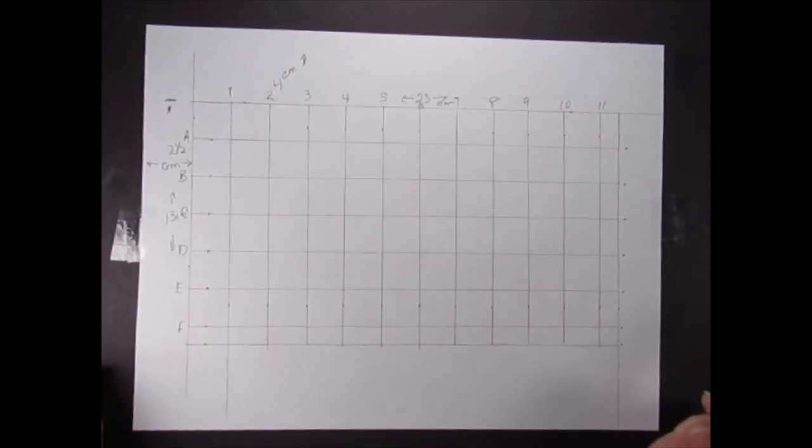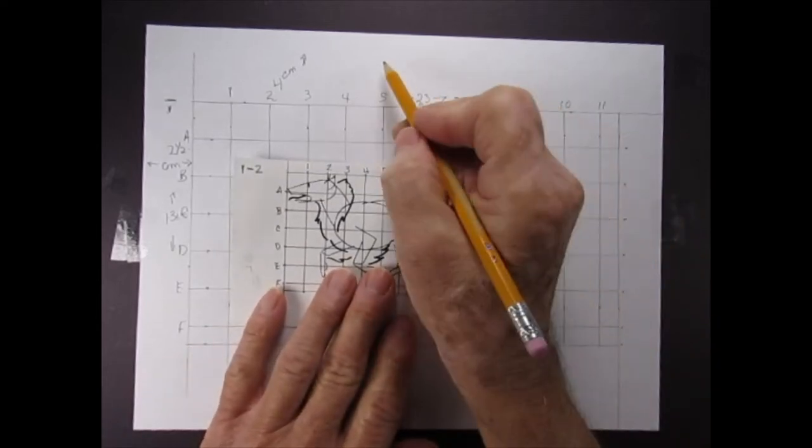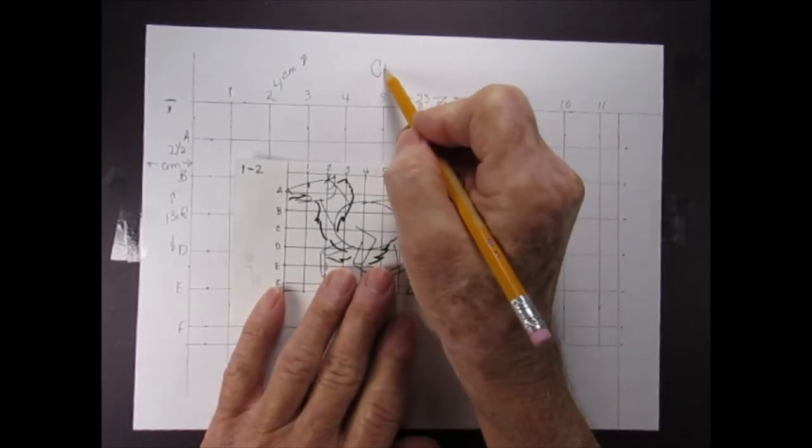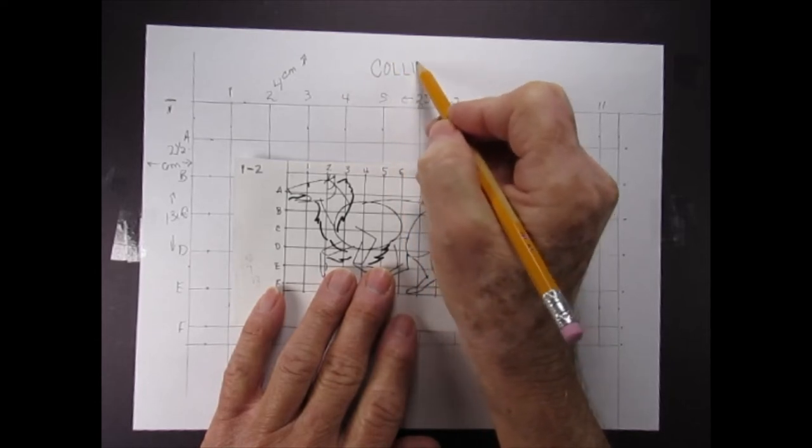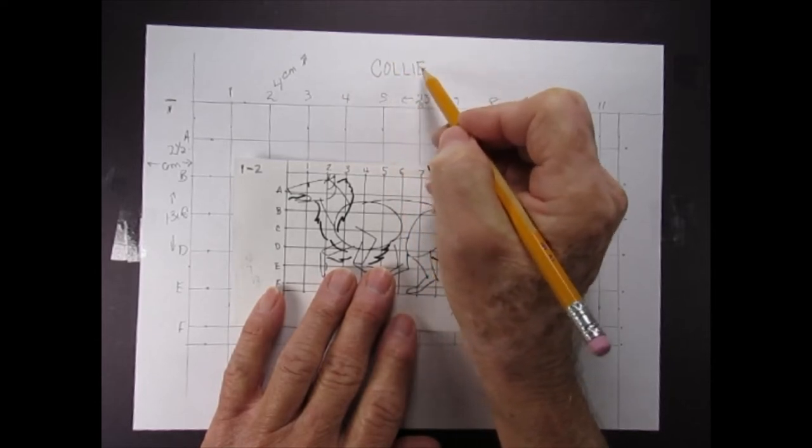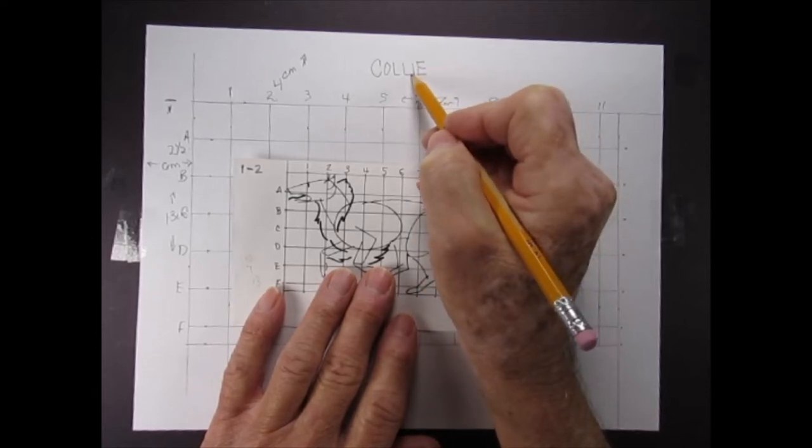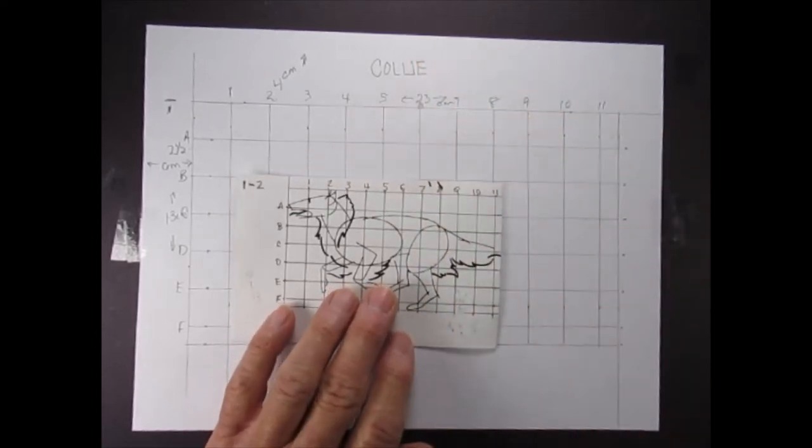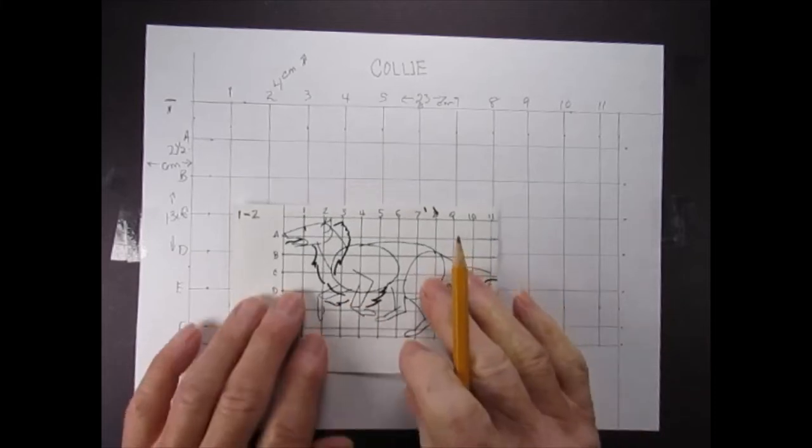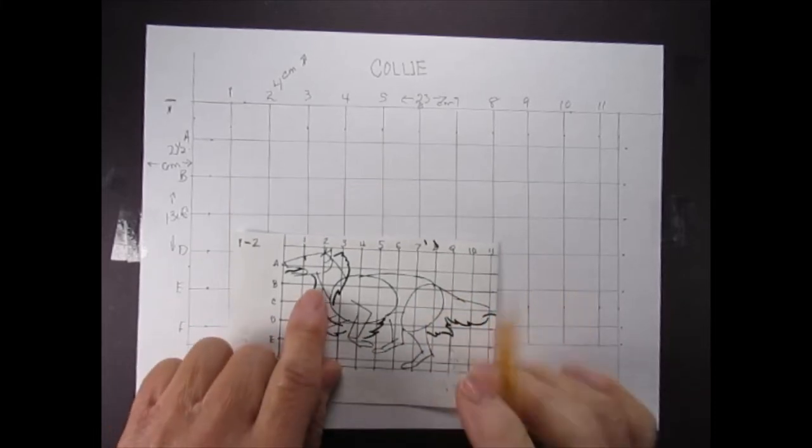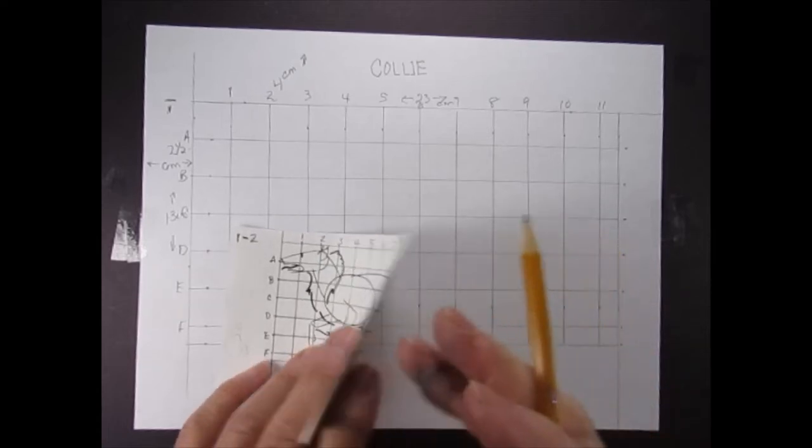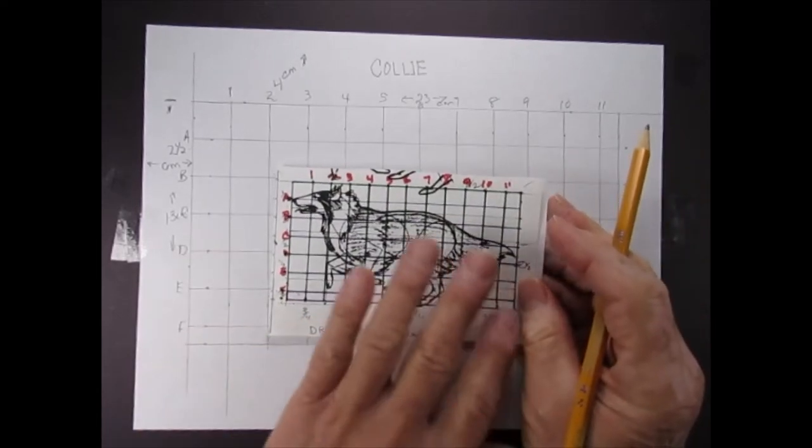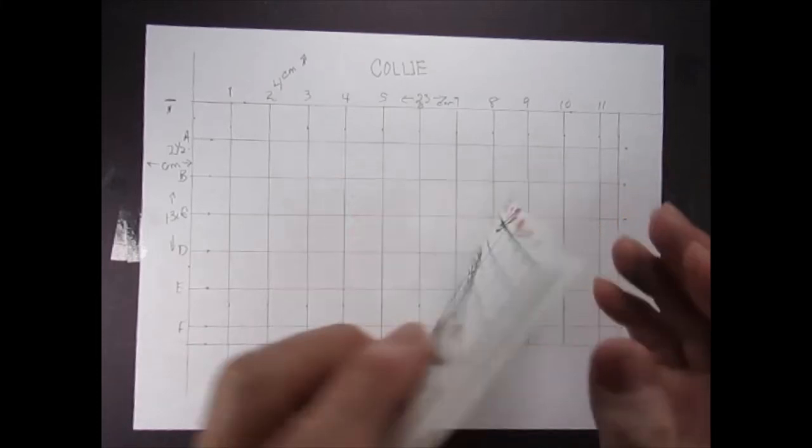Now what we're going to do is, let's go ahead and write the title here. It's a Collie. Again, this is just a lesson, a teaching lesson on how to draw. And what you want to do is you want to follow the intersections of these geometrical shapes so that we later can go ahead and give it its final form.